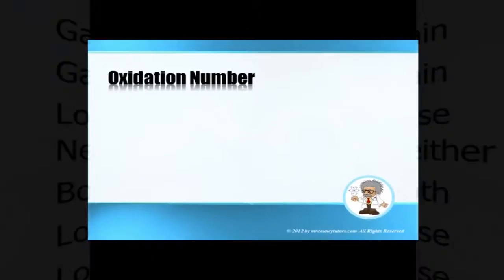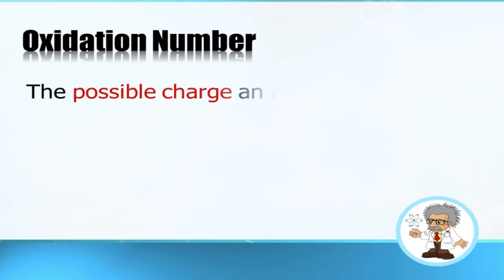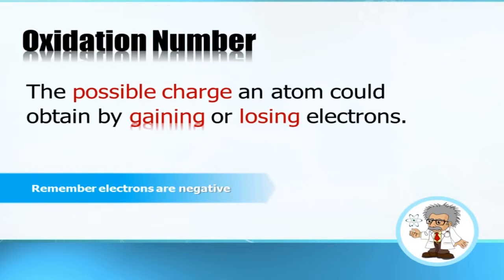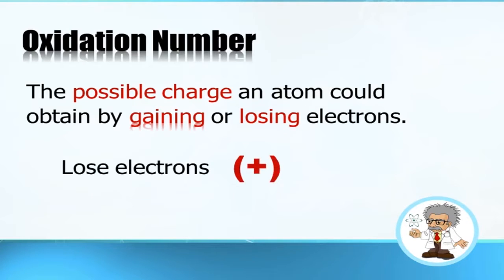Now let's look at oxidation numbers. Oxidation numbers are directly related to what we just learned — the possible charge an atom could obtain by gaining or losing electrons. Electrons are negative, so if you gain electrons you become more negative, and if you lose electrons you become more positive. Lose electrons: positive. Gain electrons: negative.